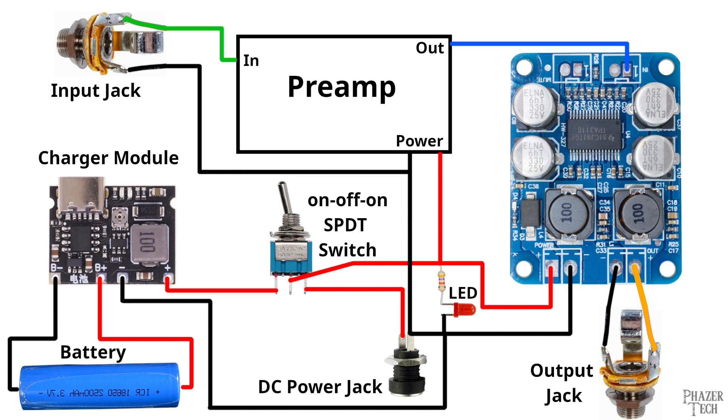Other than that, the connection should be straightforward. The input jack goes into the preamp and the output jack is connected to the out terminals on the power amp board.